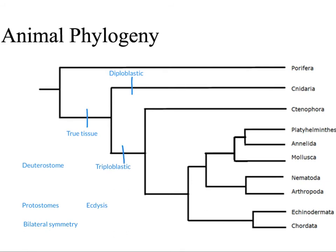The next major innovation is going to be bilateral symmetry. Most animals actually have bilateral symmetry. There are two groups that have radial symmetry, but it is a paraphyletic grouping. The Cnidaria and ctenophores are the only two with true radial symmetry.